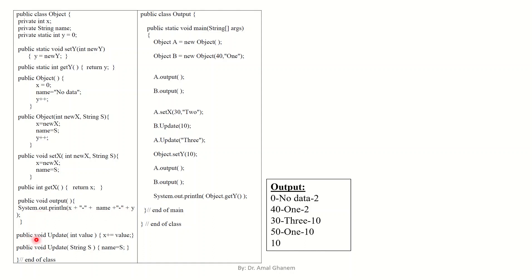We have two methods both called update — public void update — so they have exactly the same name. The difference is the first one takes an integer value, and the second one takes a String s. These are overloaded methods with different parameter types. If you call the first method with an integer value, it does x plus equals value, adding the parameter to x. If you call the second one with a String s, it saves s into name, changing the name.